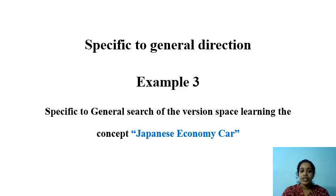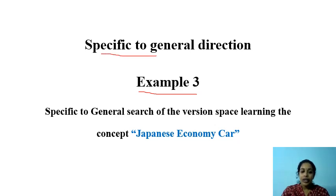Now we are going to discuss Example 3, related to the specific-to-general direction of finding the version space. Here we are going to learn the concept of the candidate elimination algorithm.